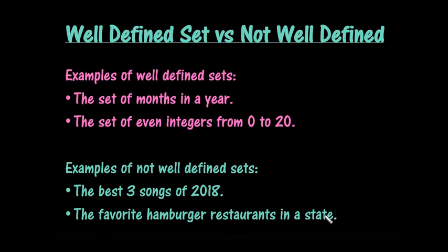The favorite hamburger restaurants in a state — well, it depends on the region that you're in and who you talk to. Some people may say it's one restaurant versus another. So a well-defined set is something that you could clearly write down all of the values in it based on the description, while a not well-defined set is something that could change depending upon who you ask.